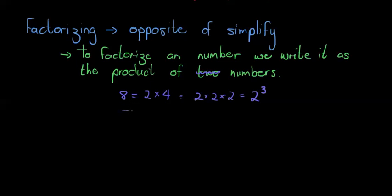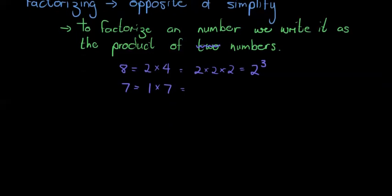Now whenever a number like 7 can only be written as the product of 1 and itself, that's the only way of factorizing it — it's called a prime factor. We've already looked at this: 7 is a prime factor because there's no way of writing it other than 1 times itself.